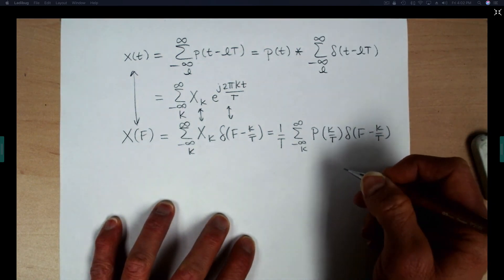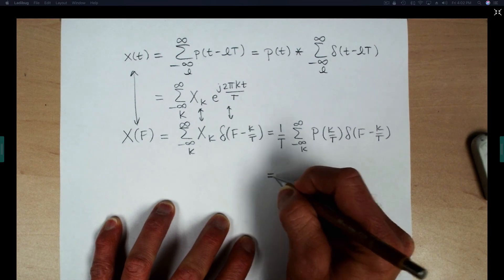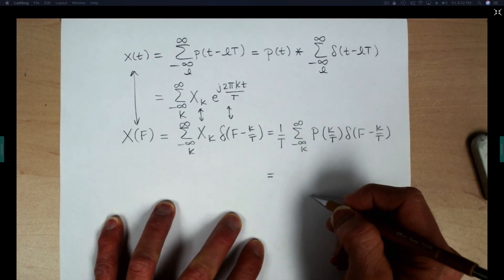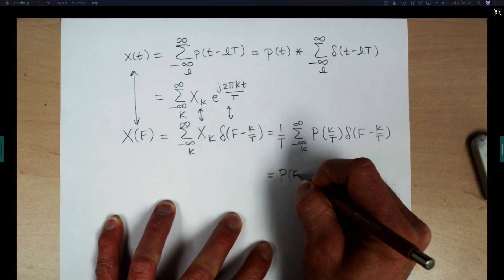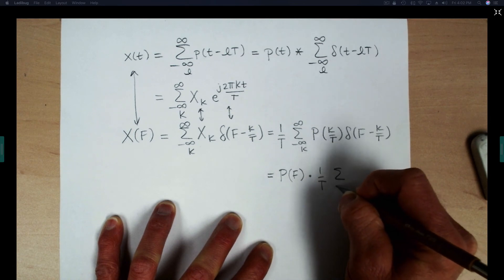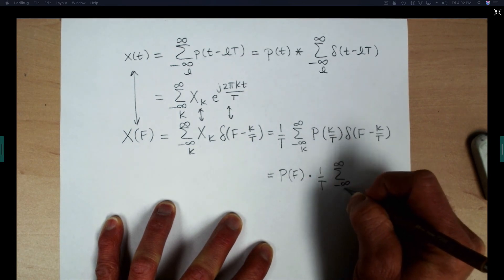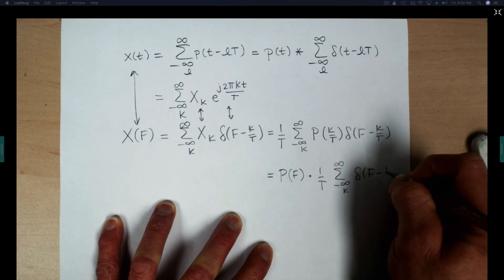And then as a final step, I want to write this one more time using the sifting property of delta functions, but using it in reverse. So we'll pull out P of F and we can write the rest of this as 1 over T a sum on K delta F minus K over T.